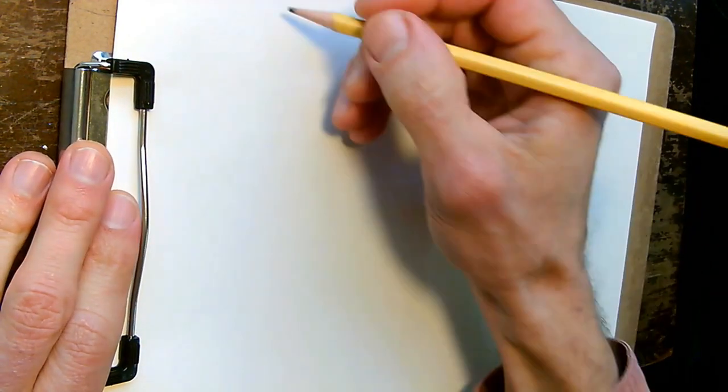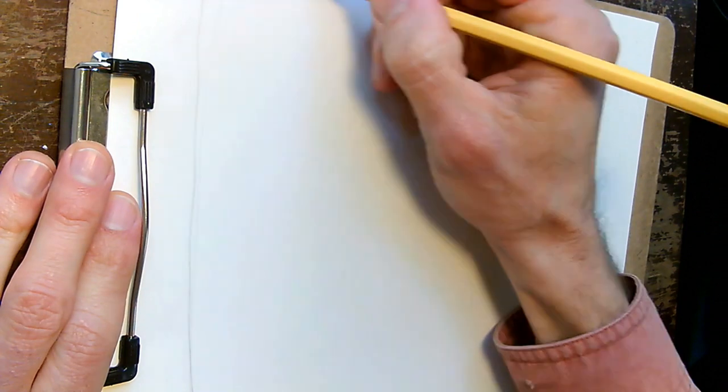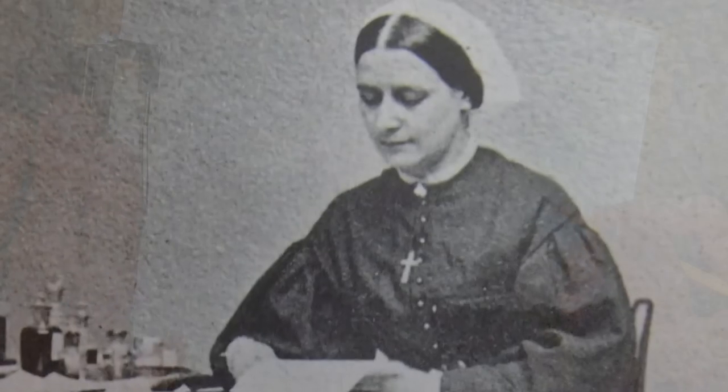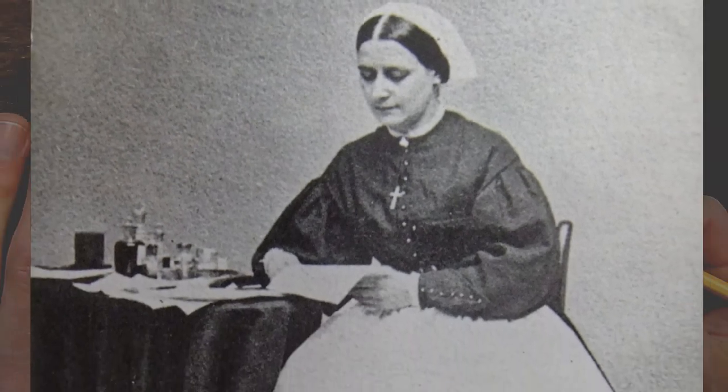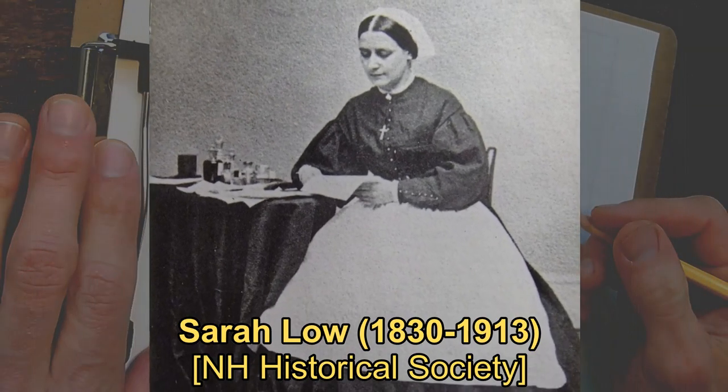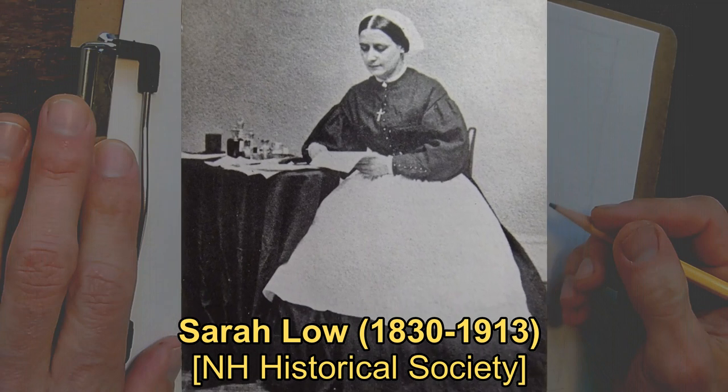I'm holding the paper wide and like always I'm going to start by roughing out a frame for my picture, and then I get out an actual photograph of Sarah Lowe. Yeah we know what she looked like. This picture comes from the New Hampshire Historical Society and I'm just going to take a look here.